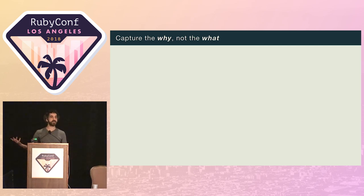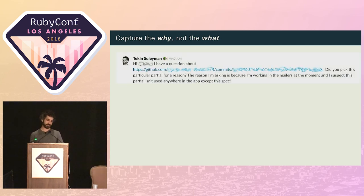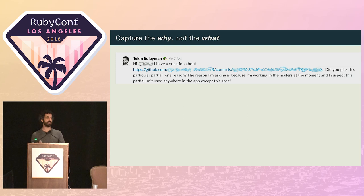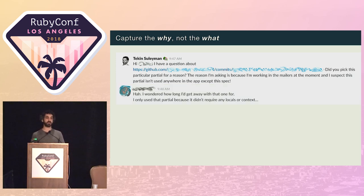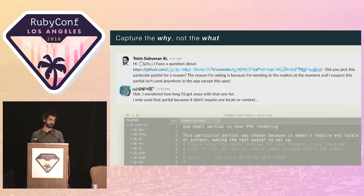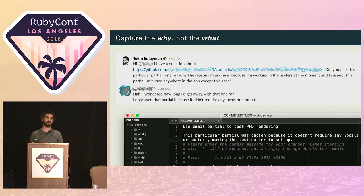It's not even some hypothetical person — if you do code reviews, it's literally the person that's going to be reviewing your PR. For example: while refactoring some partials, a developer came across one that didn't appear to be referenced anywhere in the app except for one spec testing PDF rendering code. They wanted to know why it was used there. Luckily the developer who wrote the test confirmed they'd chosen it because it was basically plain HTML and made the test easier to set up. That's an example of something you could capture right there in the message — then if that person had left, the information would still be available.